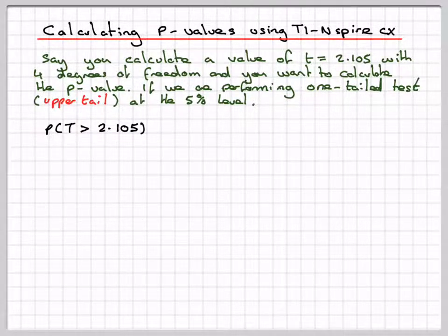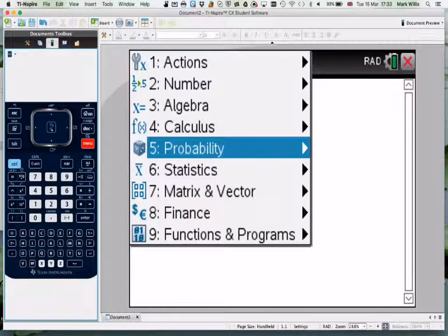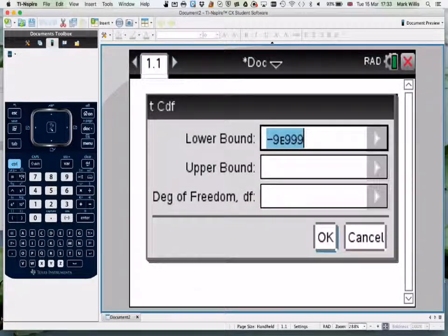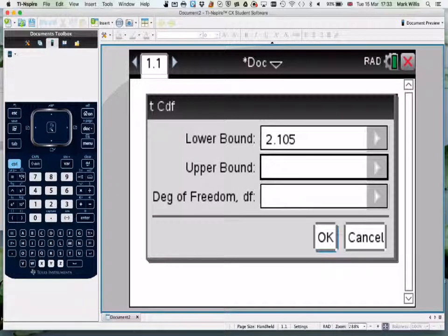To do that, go to your GDC and select the calculator mode, then go to Menu, Probability, Distributions, and TCDF.